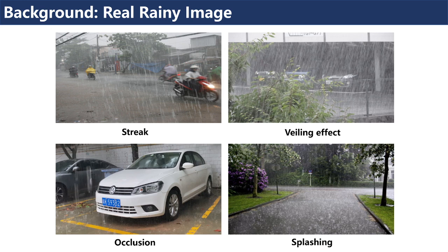Rain is a common weather phenomenon which dramatically degrades image quality and significantly affects many high-level computer vision tasks such as auto-driving and city surveillance. Real raining imaging suffers from different patterns like rain streak, beating effect, occlusion in the sky, and splashing on the ground.